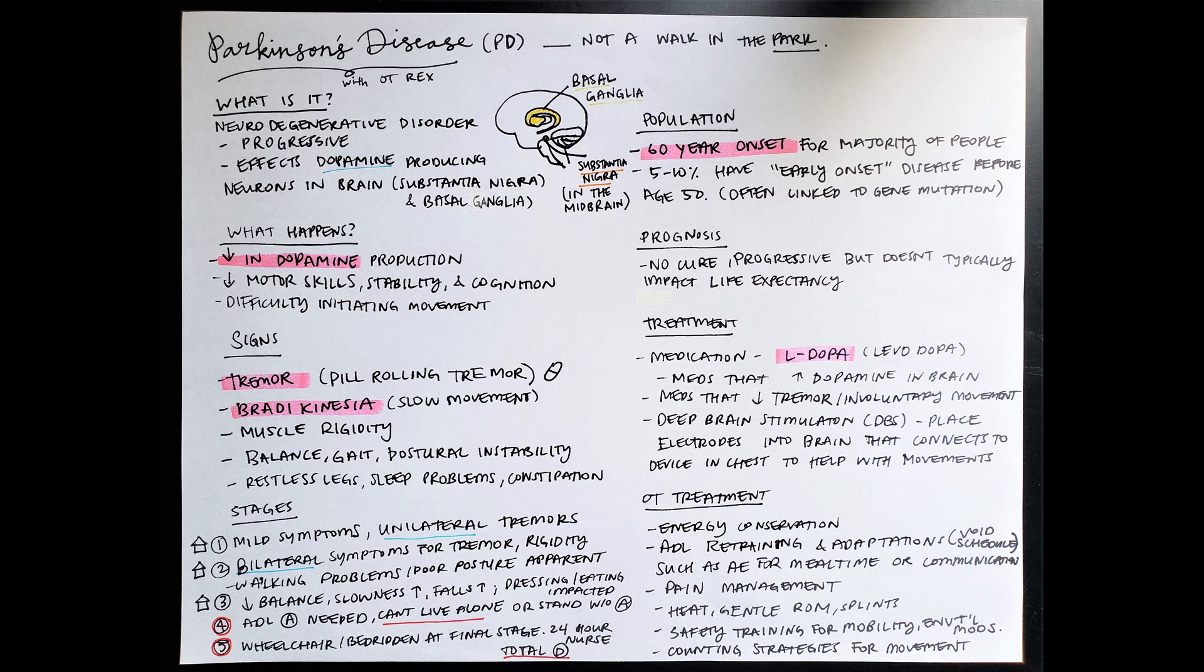Stage five is when the individual is at total dependence. So it's likely that they will have a 24-hour caregiver or nurse, and they are typically either in a wheelchair or in bed for their final stage.